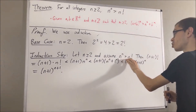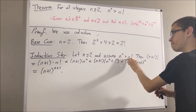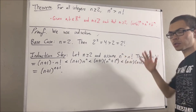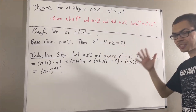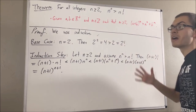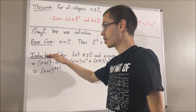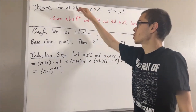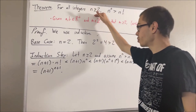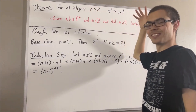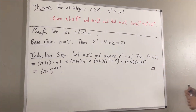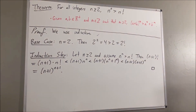So we have shown that n plus 1 factorial is less than n plus 1 to the power of n plus 1 — that is, the theorem holds for n plus 1. That was the whole goal of the induction step, so this completes the induction step. Because we've completed both the base case and the induction step, we have by mathematical induction that for all integers n greater than or equal to 2, the theorem is true. This completes the proof.